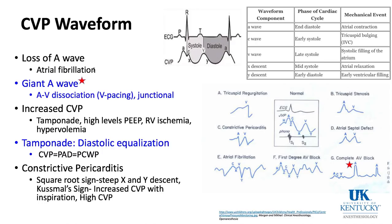If a patient is in atrial fibrillation they will not have an A wave. With AV dissociation — for example, V pacing — the atria and ventricle occasionally contract simultaneously, and the pressure waveforms can reflect back into the SVC and make a huge A wave. This is shown graphically with a giant A wave, which can occur with AV dissociation of any cause: junctional rhythm, ventricular pacing, or heart block — all causes of a giant A wave.